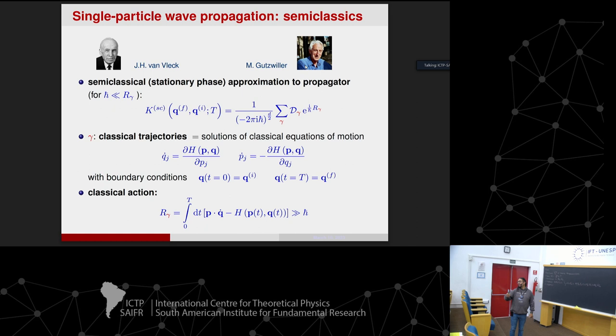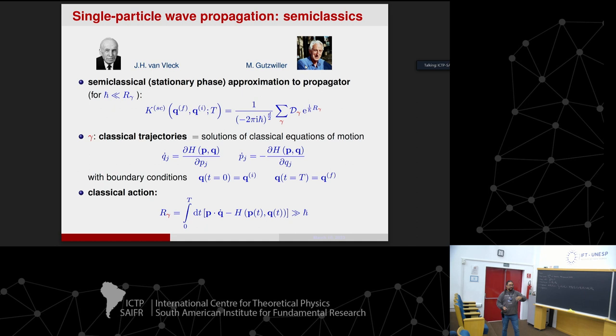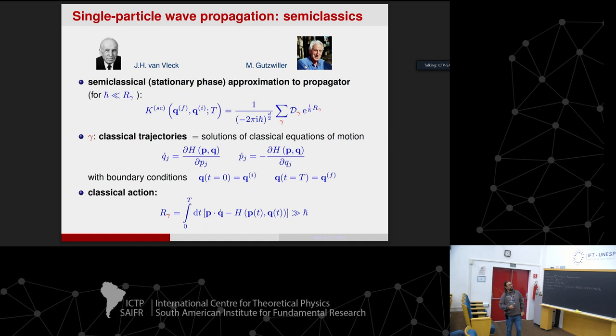Way before Feynman, Van Vleck — a Nobel Prize winner, not for semi-classics but for magnetism — already had the intuition that quantum mechanical amplitudes are related to classical actions. You can see this in solvable examples: the free particle propagator has the classical action in the exponent, and so does the harmonic oscillator propagator. But nobody knew how to go beyond linear and harmonic systems.